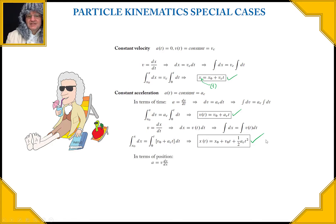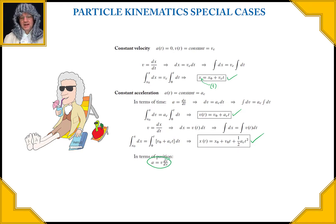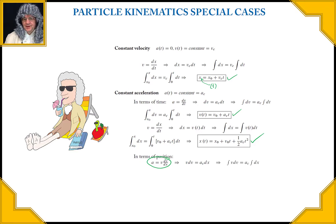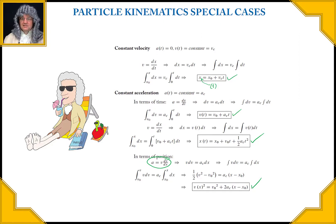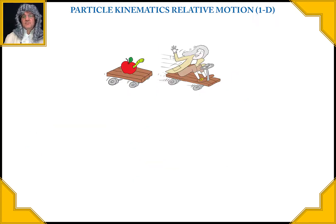Now this is where the wildcard comes in. Remember the wildcard fundamental kinematic equation. Rewriting it, rearranging, and integrating, we end up with the relationship between velocity, acceleration, and position. So here's where that last equation came from — and it all came from those fundamental kinematic equations.